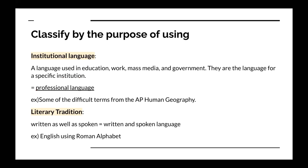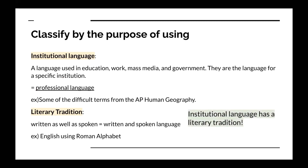First, classify by the purpose of using. Institutional language is a language used in education, work, mass media, and government. It means that they aren't always the actual way people speak — they are the language for a specific institution, like professional language. For example, it could be some of the difficult terms from APMN Geography. Institutional language has a literary tradition, meaning written as well as spoken language. For example, there is English using the Roman alphabet.